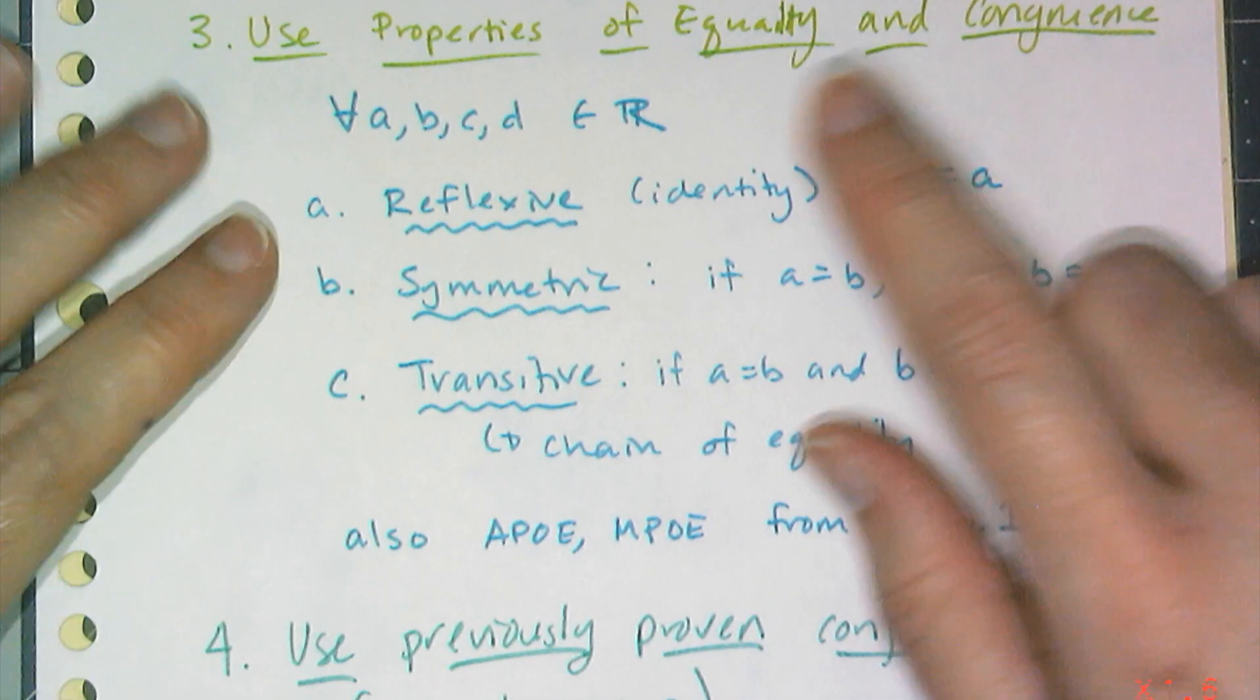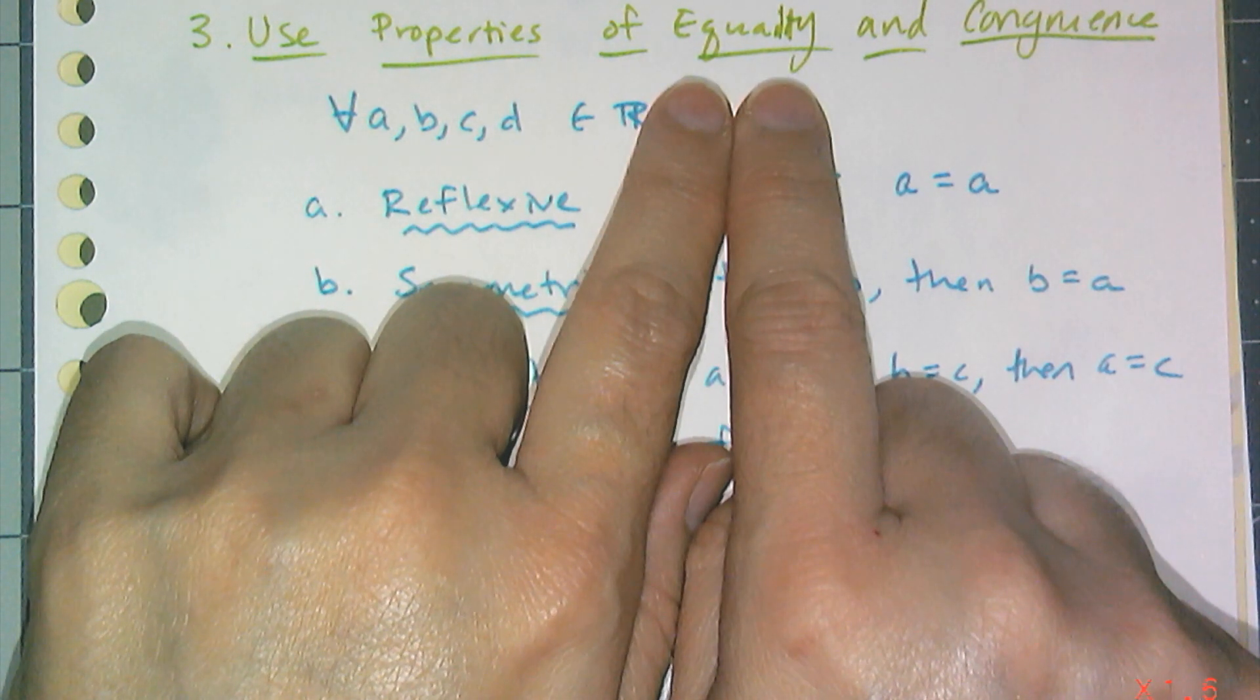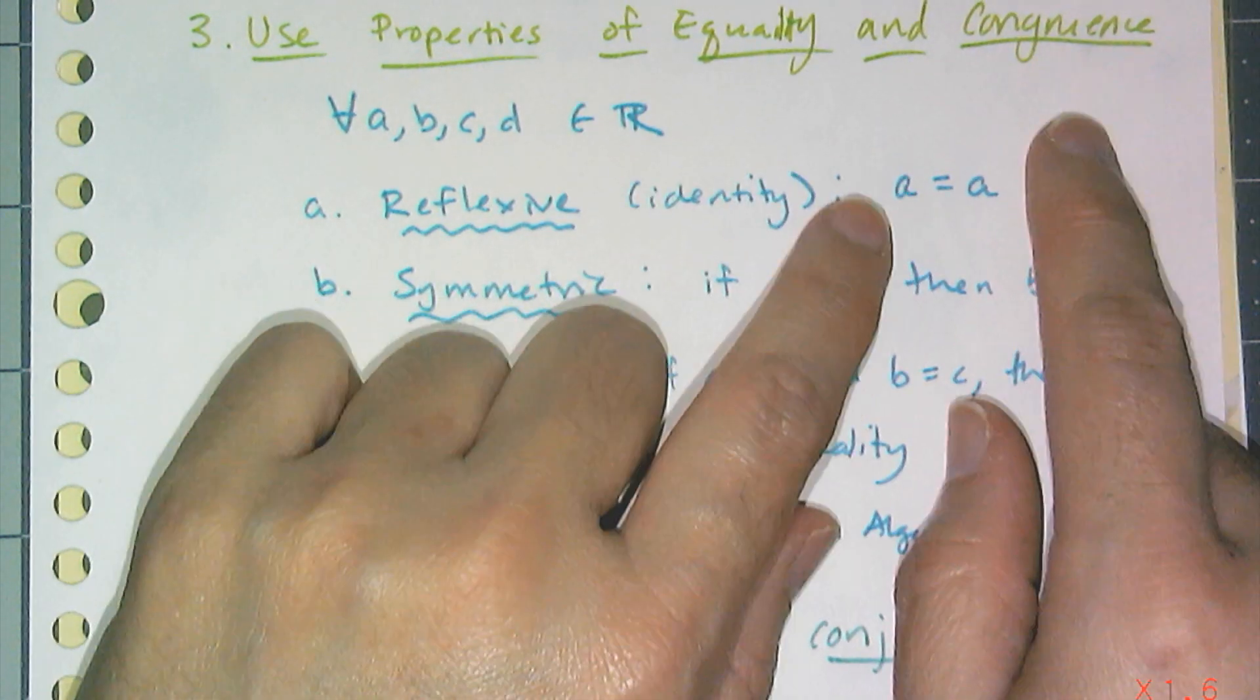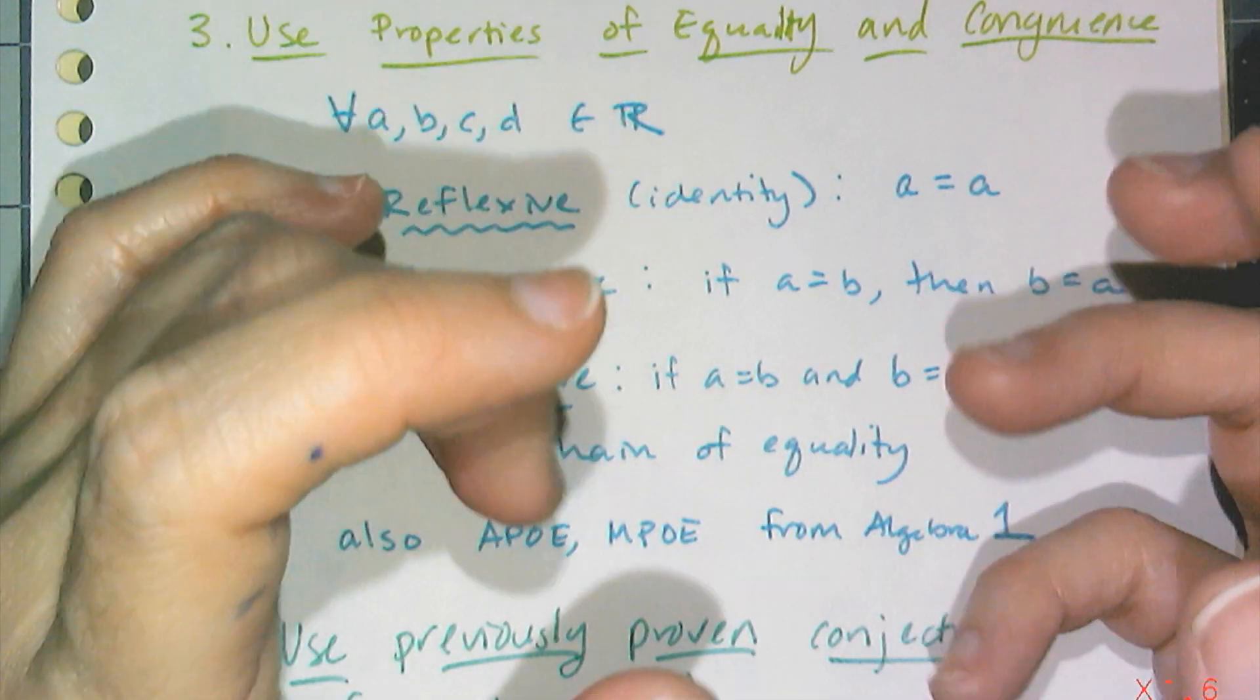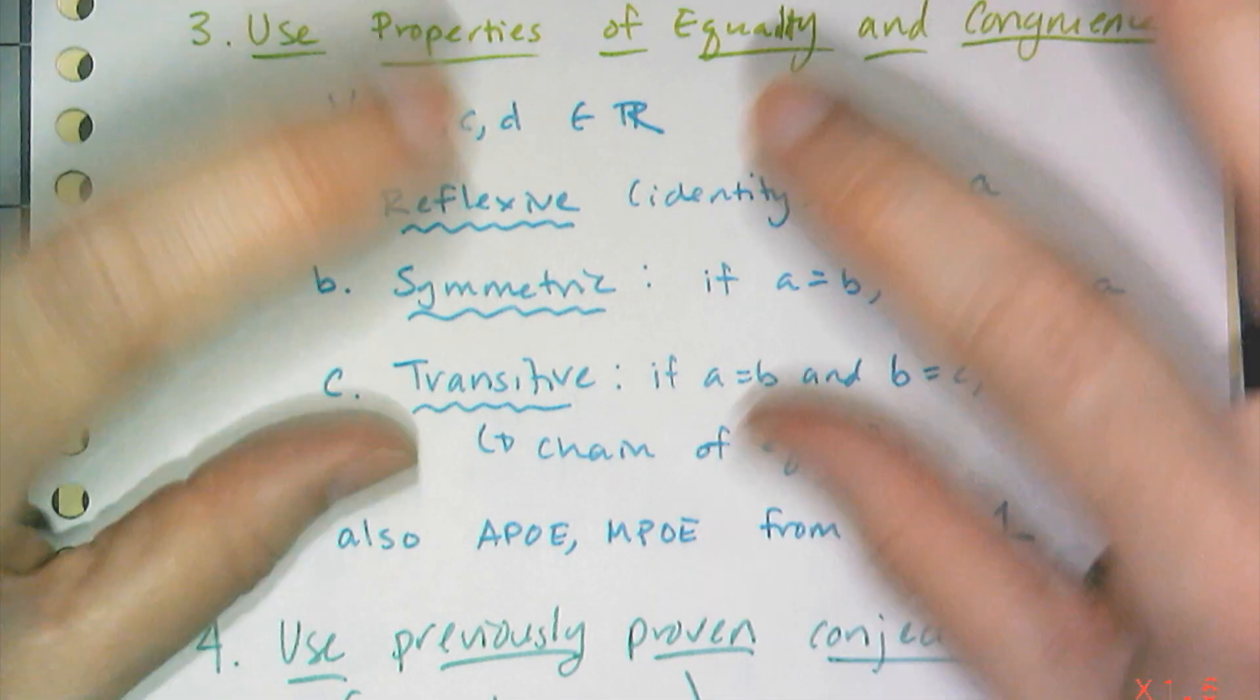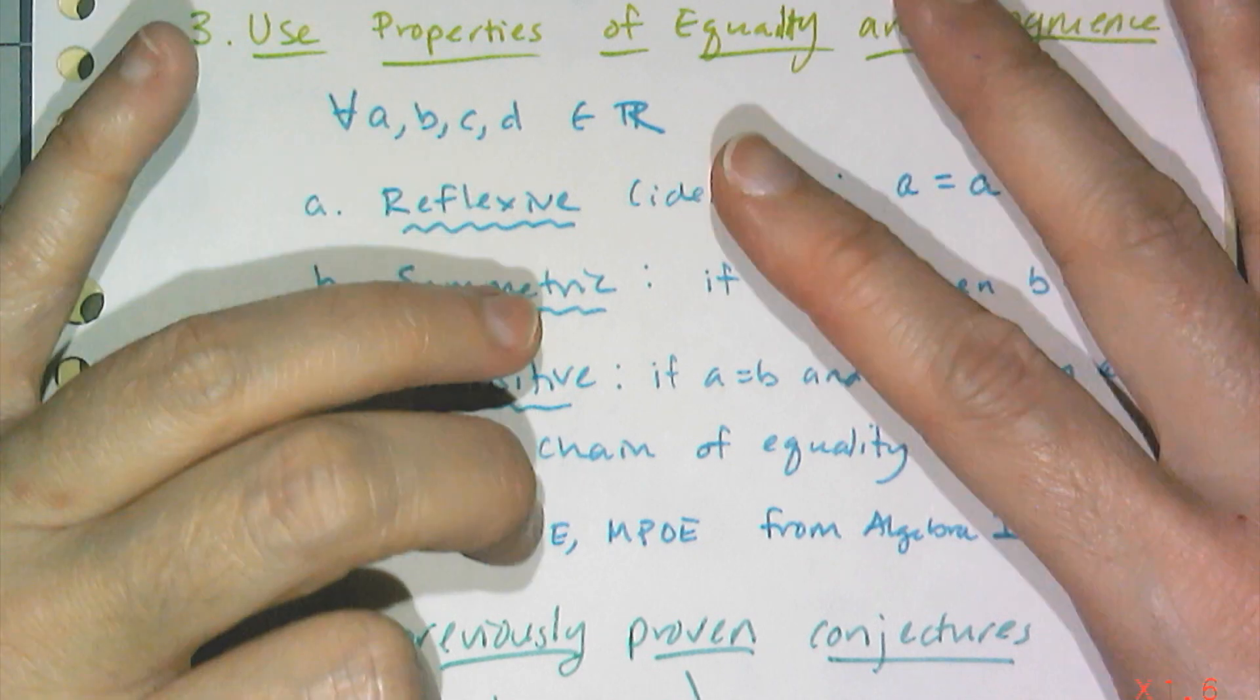And then, of course, we have our properties of equality, which we're going to extend to this idea of congruence in geometry. Equality relates to quantities, like numbers are equal. Equations can be equal because they represent quantities on two sides. Congruence represents objects or shapes. So two shapes can be congruent, meaning they're basically the same shape and same size. Like two squares of side length of one are congruent squares. So congruence for objects, equality for numbers. And so let's look at the properties of equality.